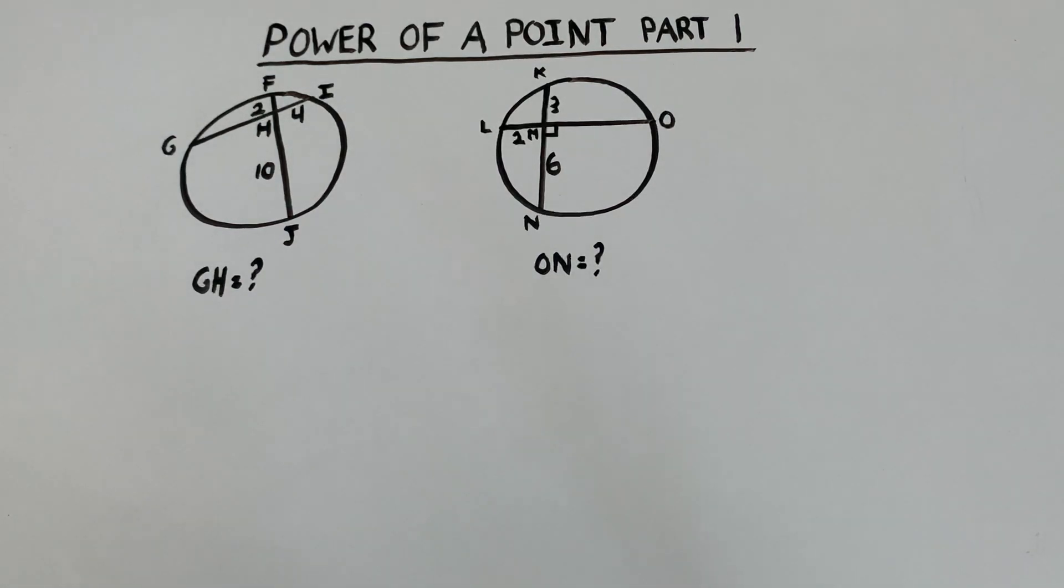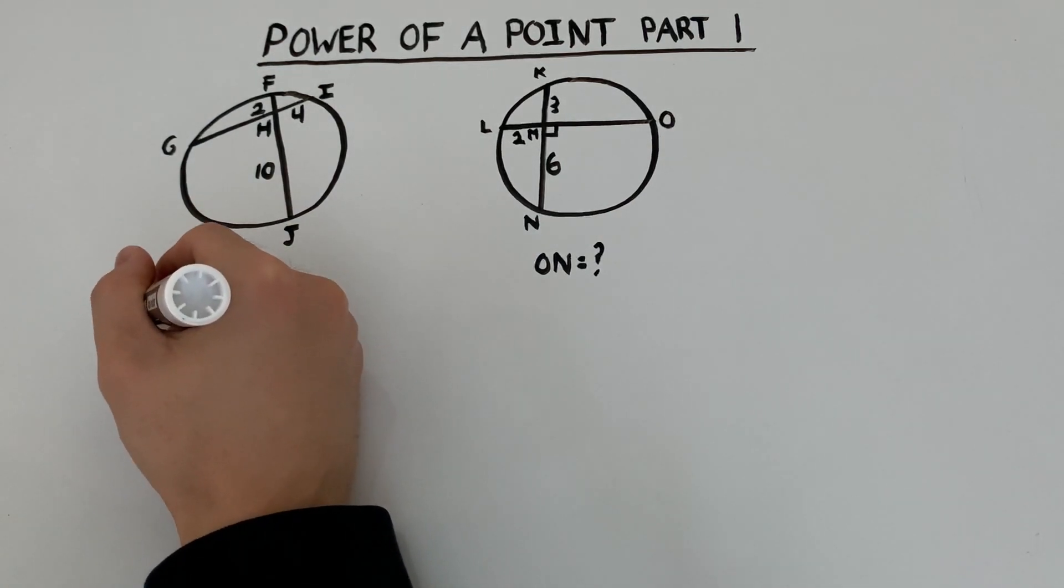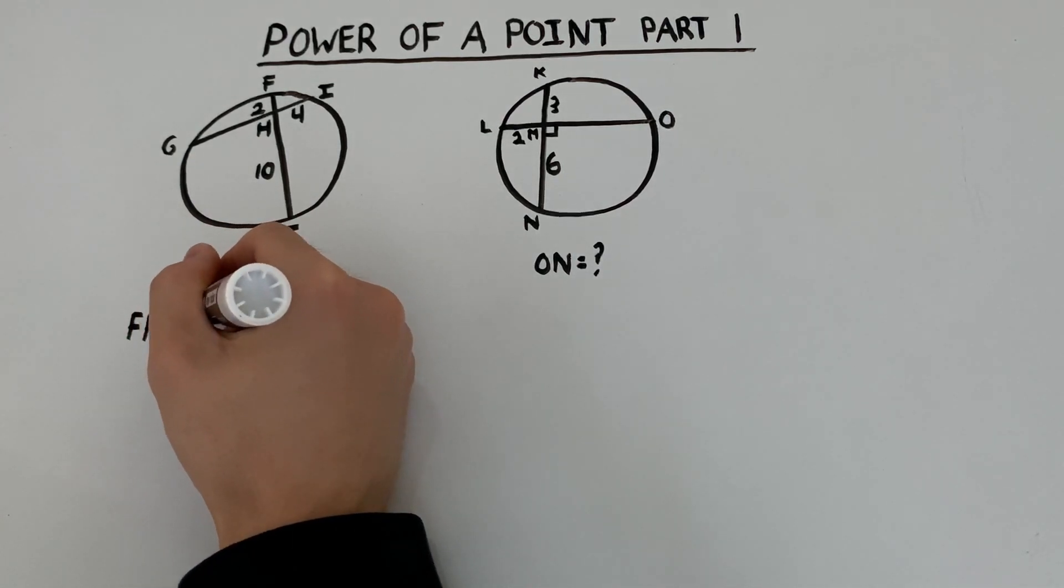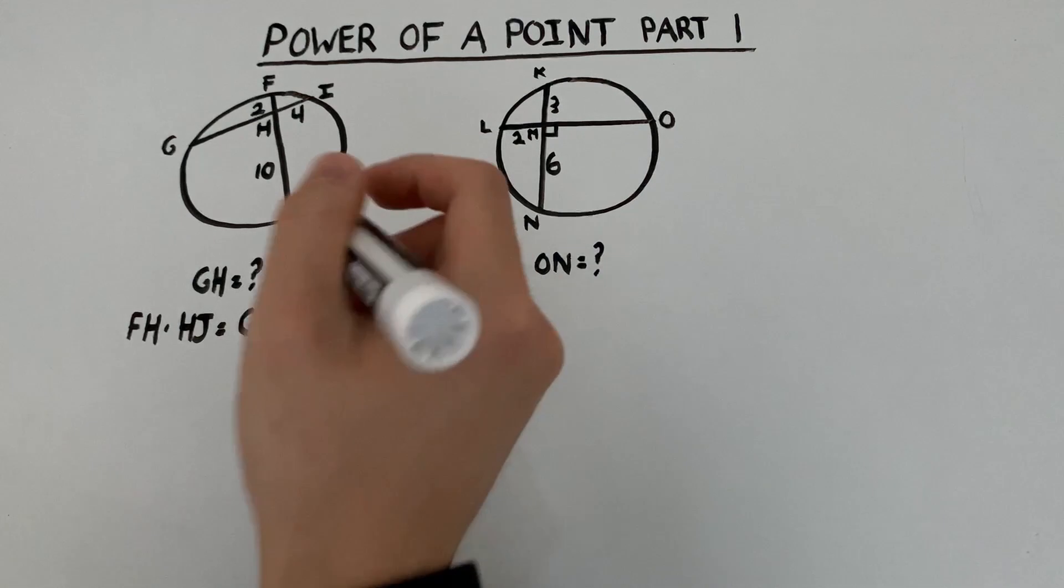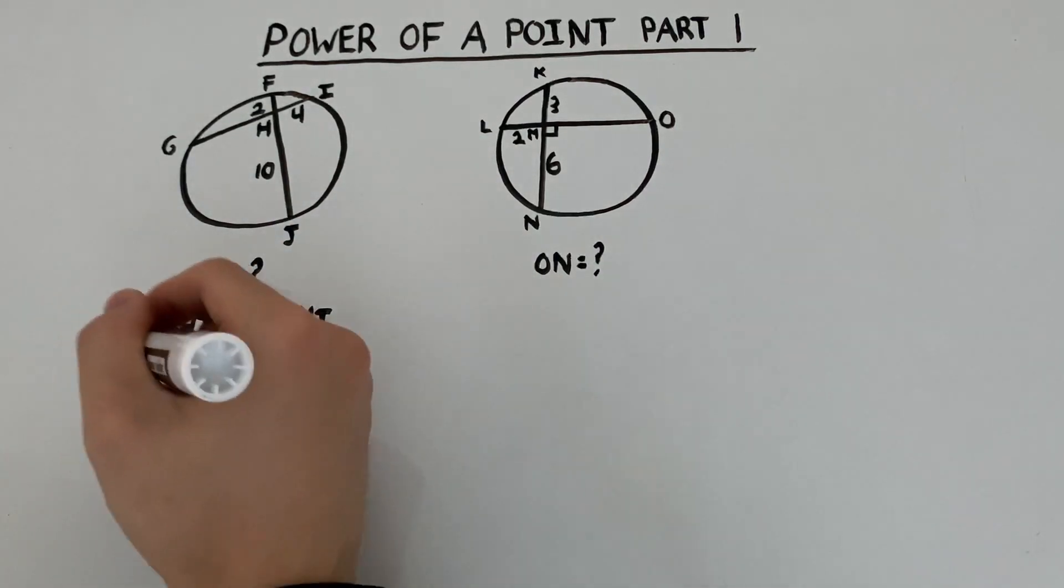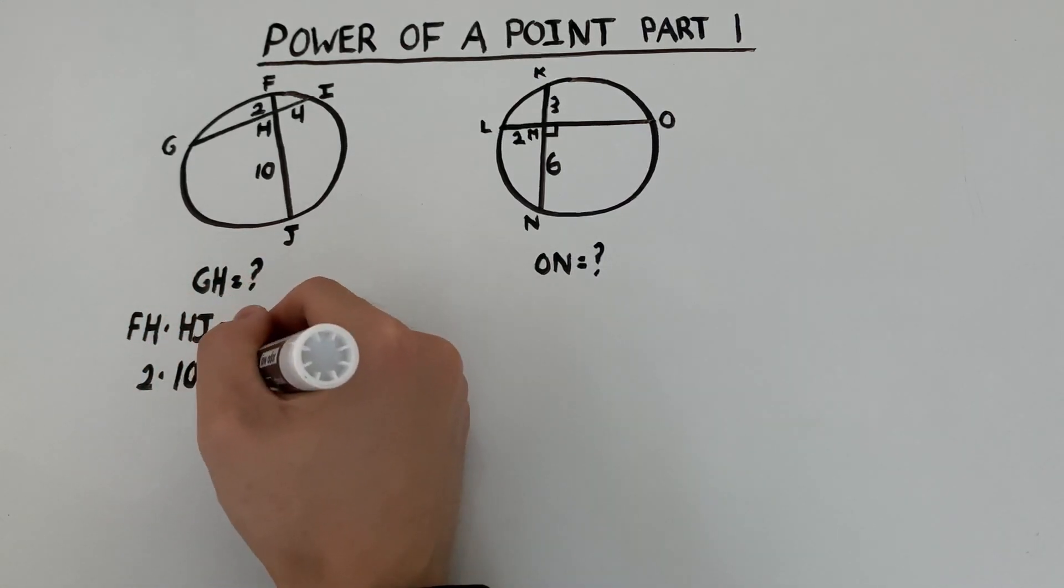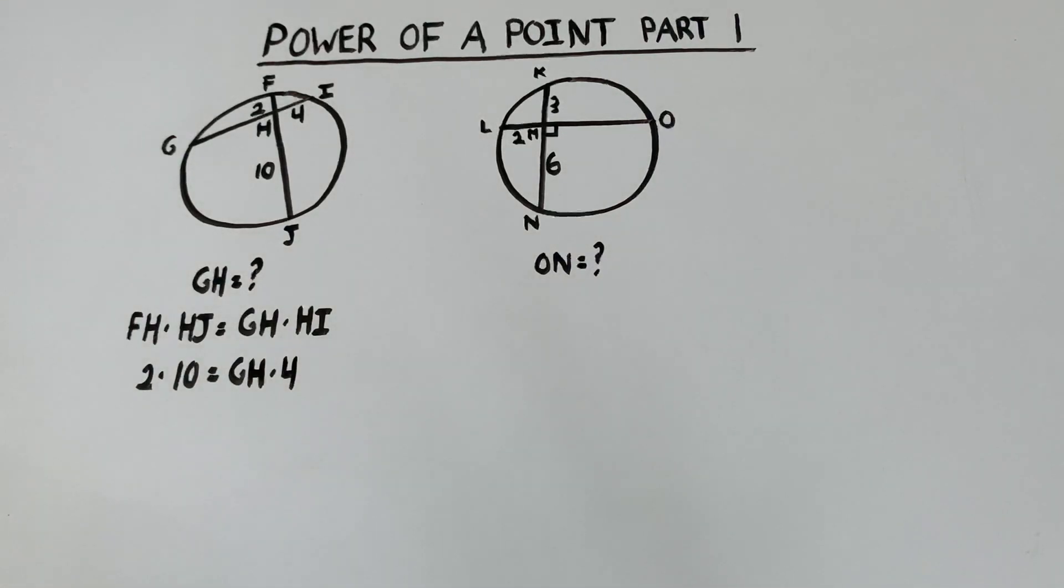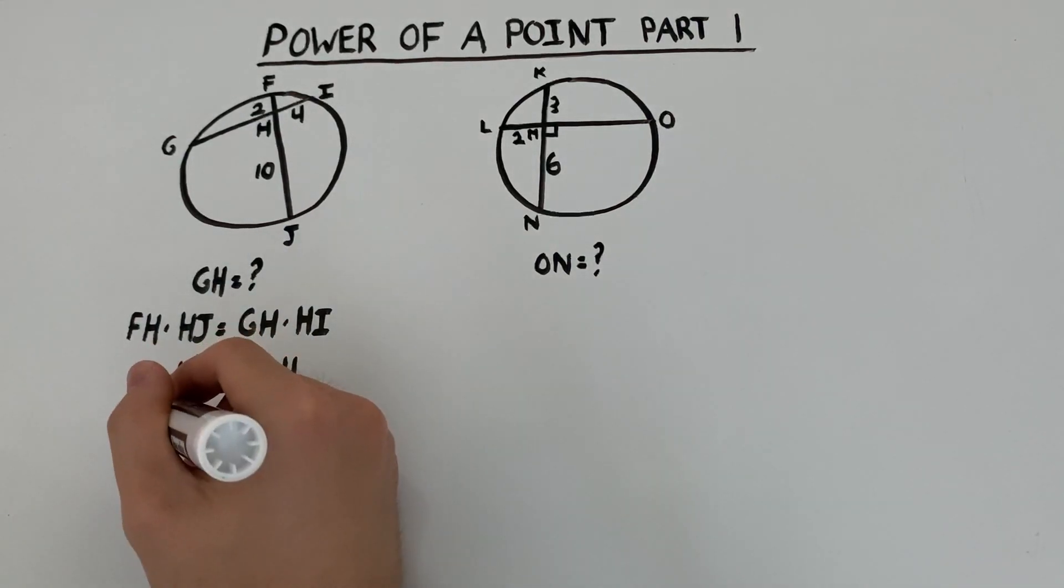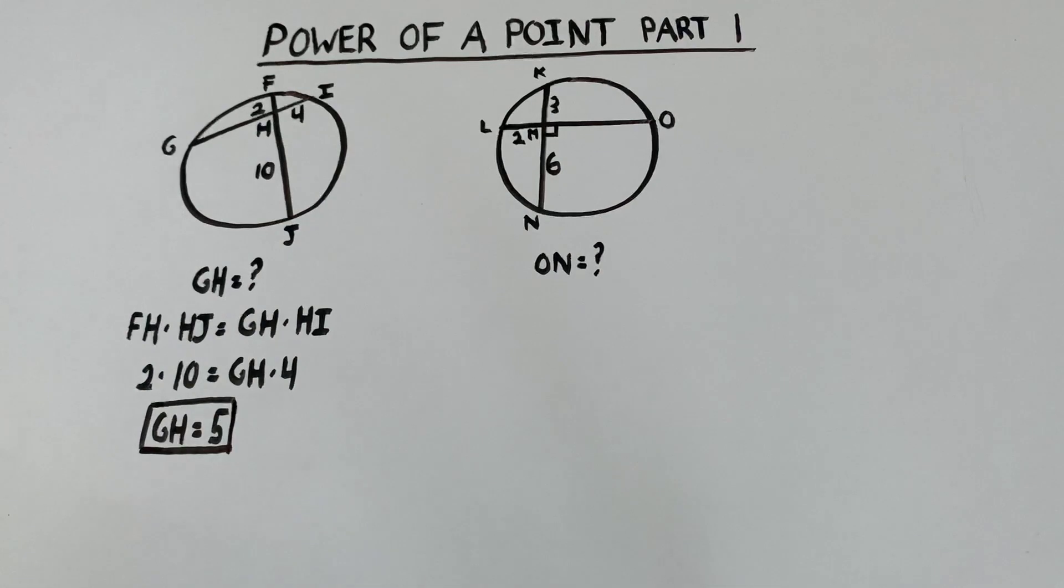So we're going to use power of a point on point H. So power of a point states that FH times HJ equals GH times HI. FH is 2, HJ is 10, we're trying to find GH, and we know HI is 4. And we'll find that GH is equal to 5. Nice and easy.